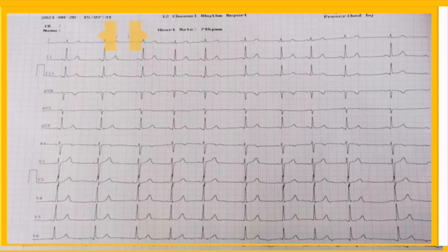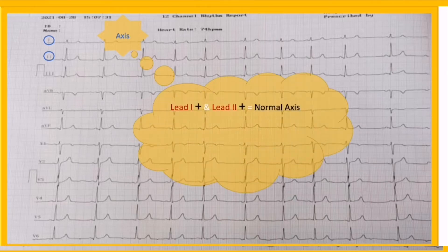The next step is axis analysis. The best leads to localize heart axis are leads I and II. The normal QRS electrical axis ranges from minus 30 to 90 degrees in adults and occurs when both leads I and II are positive. An axis between minus 30 and minus 90 degrees is considered left axis deviation and occurs when lead I is positive but lead II is negative.